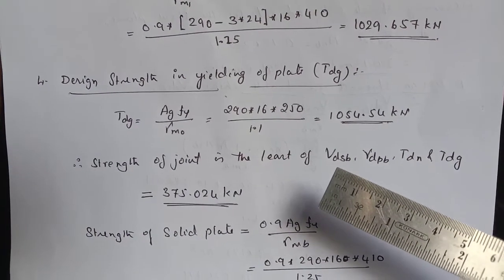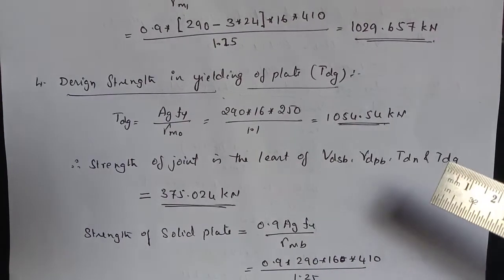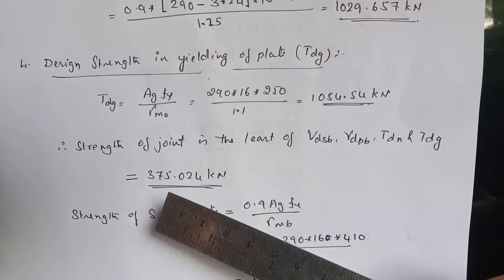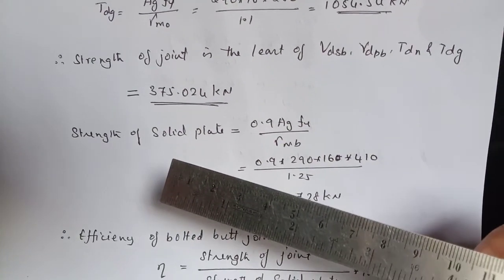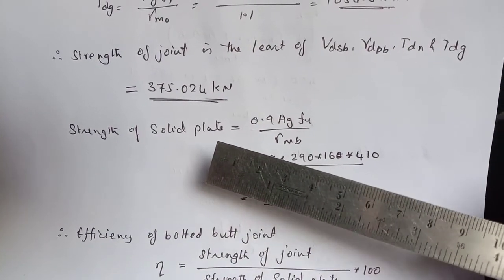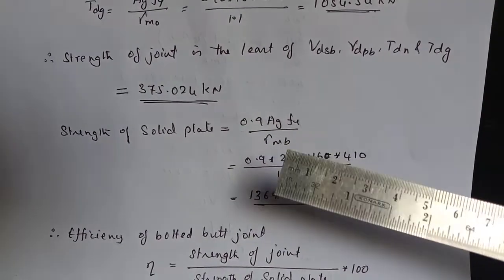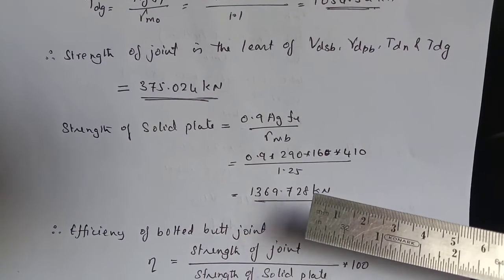So strength of the joint is the least of VDSP, VDPB, TDN and TDG. That is design strength in shear, design strength in bearing, then design strength in tearing and finally design strength in the yielding. So it works out to be 375.024 KN. Therefore, to calculate the efficiency of the joint, let us calculate strength of the solid plate. Strength of the solid plate is given by 0.9 AGFU divided by gamma Mb. So the answer is 1369.728 KN.